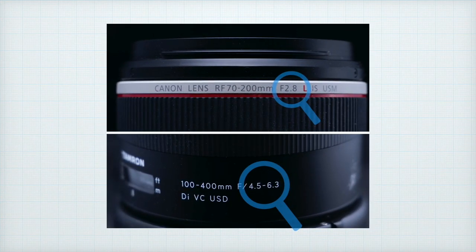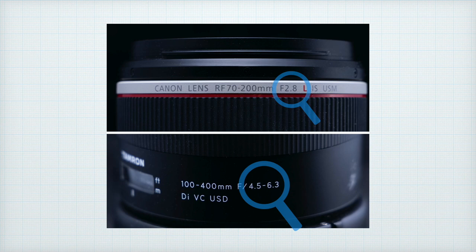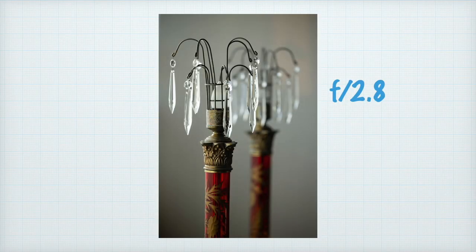Prime lenses have a maximum aperture that doesn't change. Zoom lenses can have either a constant fixed speed or a variable maximum aperture. A 70-200mm f/2.8 lens offers f/2.8 at all focal lengths. A 100-400mm f/4.5 to f/6.3 lens offers f/4.5 at its shortest end but slows to f/6.3 at its long end. Fixed aperture zoom lenses are generally more expensive and larger and heavier than variable aperture lenses with the same focal length range.